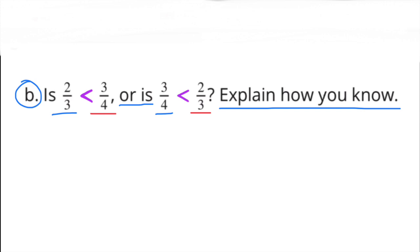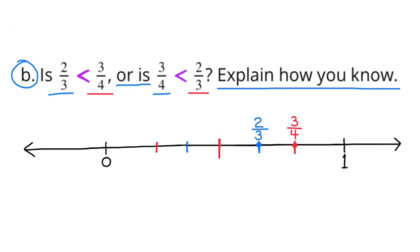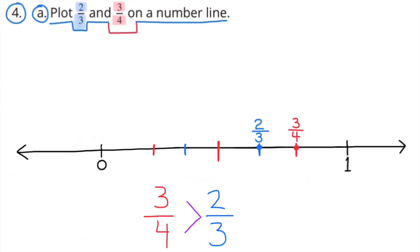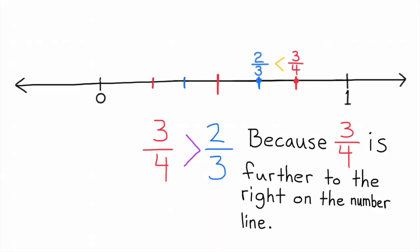Part B: Is 2/3 less than 3/4, or is 3/4 less than 2/3? Explain how you know. Here's a look at the number line with 2/3 plotted closer to 0 than 3/4. 3/4 is to the right of 2/3, so 3/4 is greater than 2/3, and 2/3 is less than 3/4. So 3/4 is greater than 2/3 because 3/4 is further to the right on the number line.